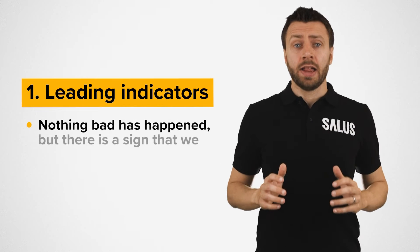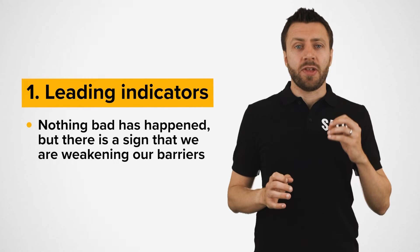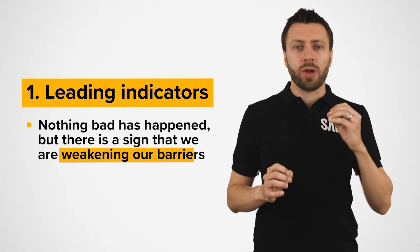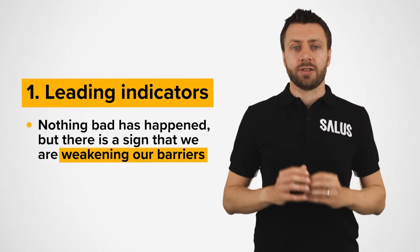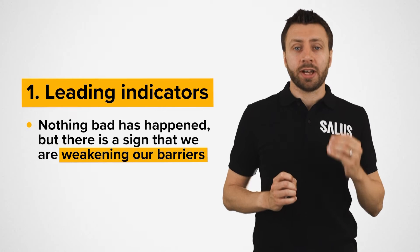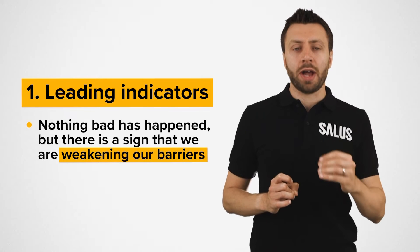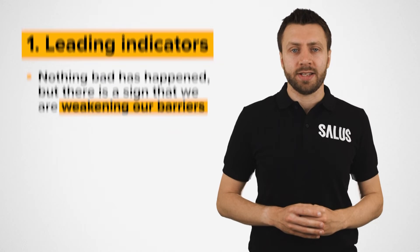Leading indicators: this is where nothing bad has happened but there is a sign that we are weakening our barriers. For example, measuring the amount of safety critical equipment that fails to meet its required performance when tested. This is a sign that if these safety systems are called into action, they may not perform as required.